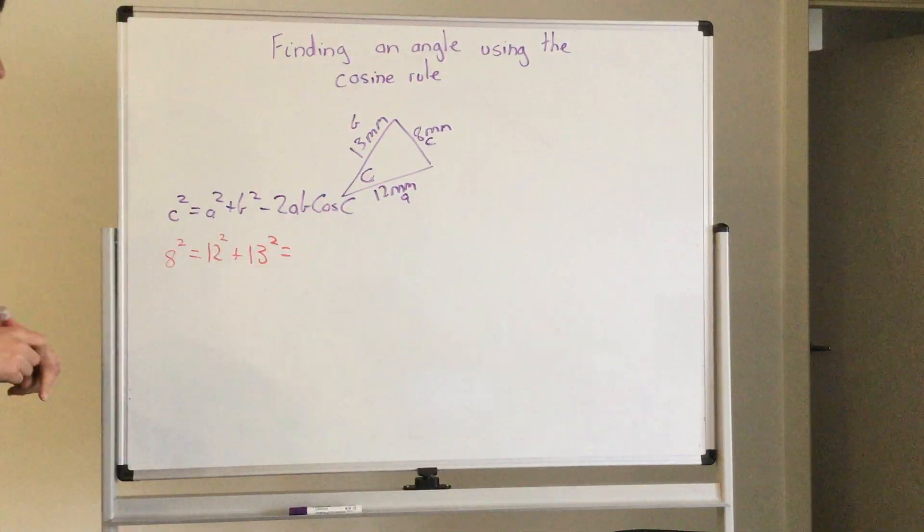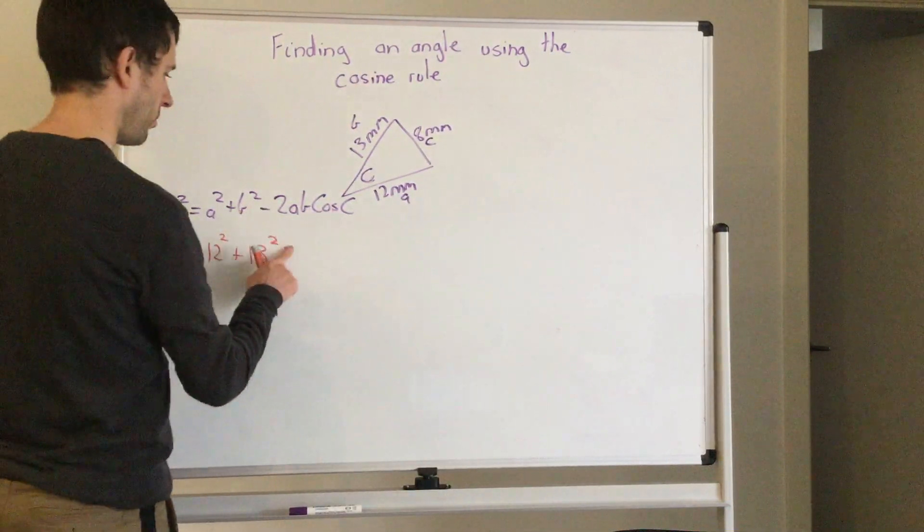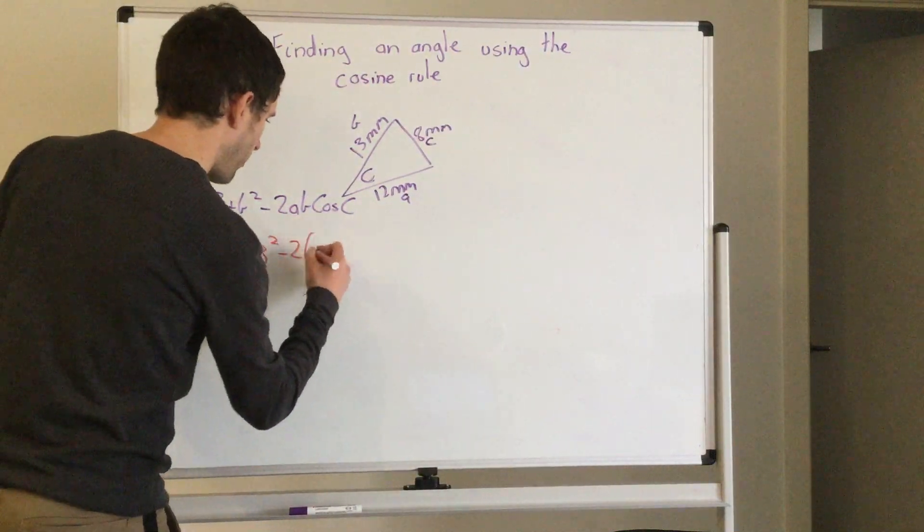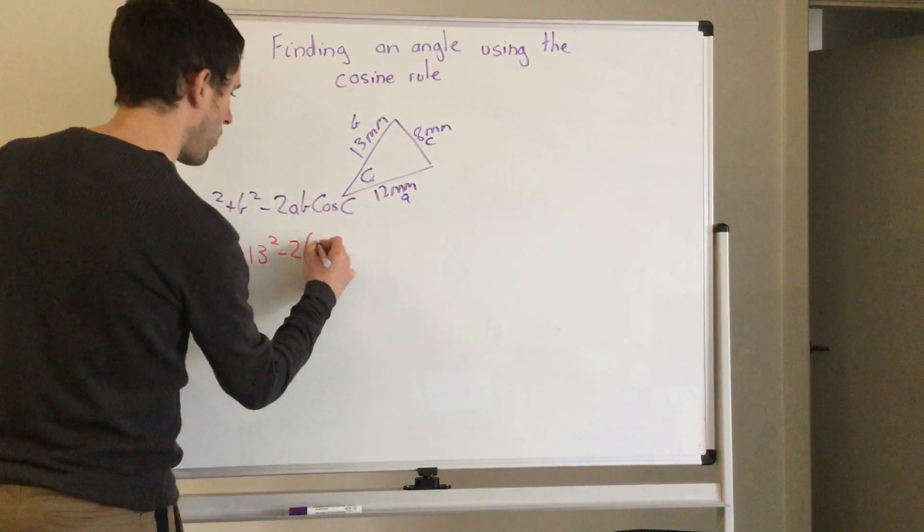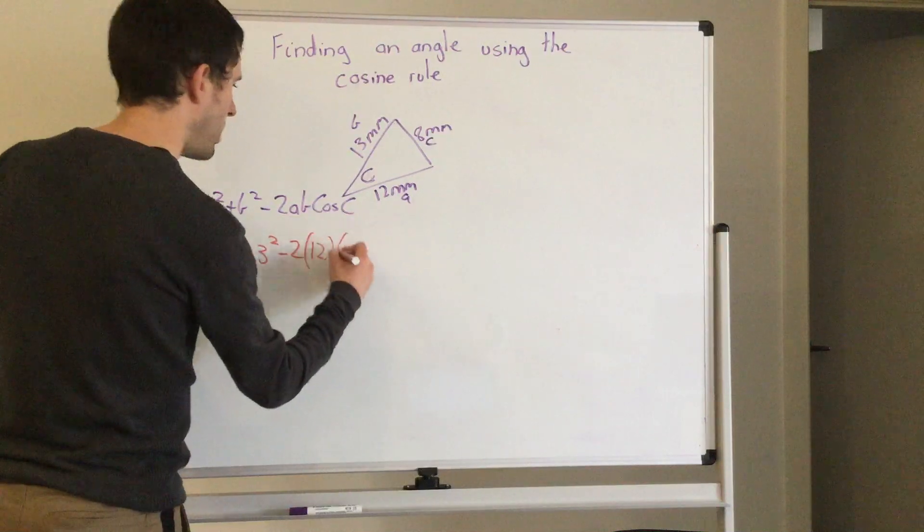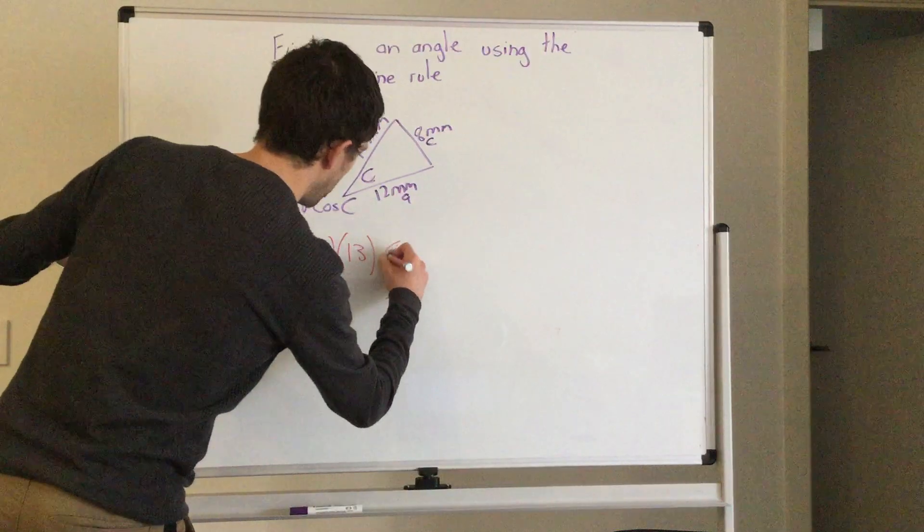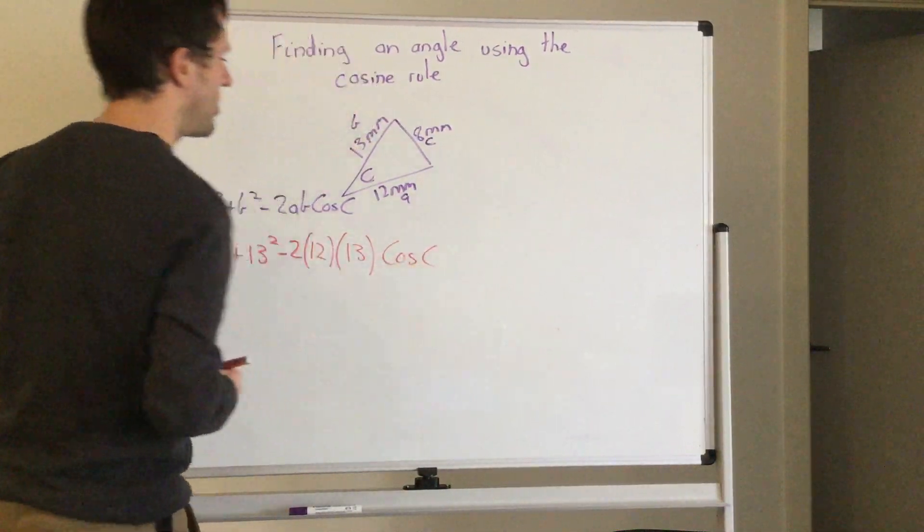b is 13, so 13 squared minus 2 times a, which is 12, times b is 13, cos c.